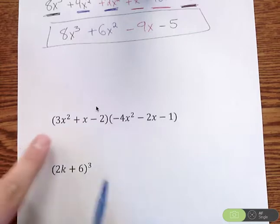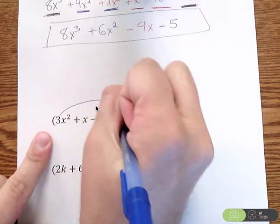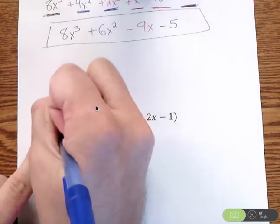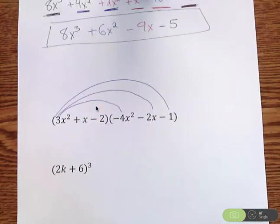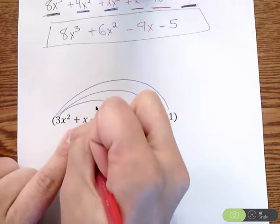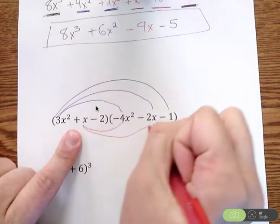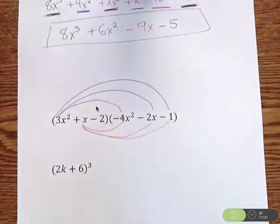What that would look like is you're going to take this 3x² and multiply it to the first, to the second, and to the third term. Then take your next term, which is x, and multiply it to the first, to the second, and to the third.